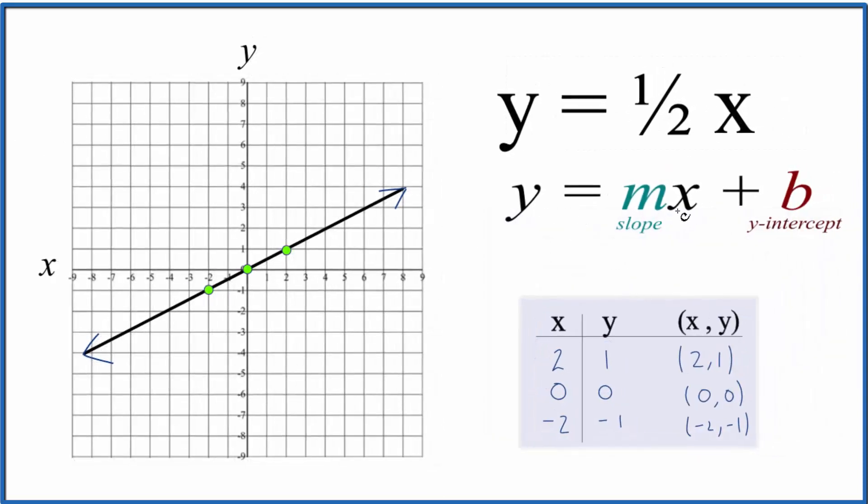So we have y equals mx plus b. Here's our m, and here's our x. And we don't have a b up here, so b is going to be 0. That's where this line crosses the y-intercept, right here, 0.